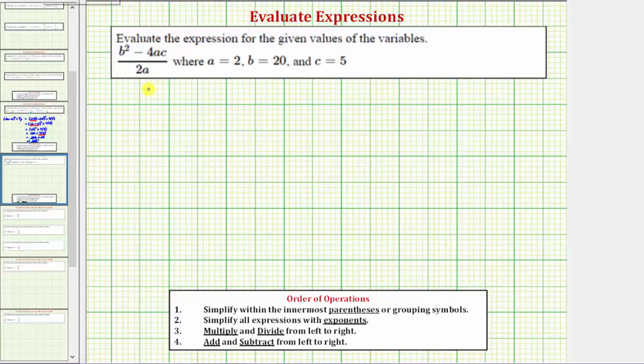So for the first step we need to perform substitution. We need to substitute 2 for a here and here. We need to substitute 20 for b here, and we need to substitute 5 for c here.